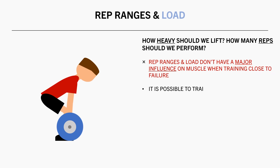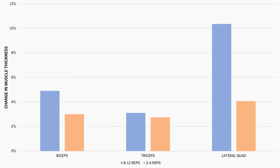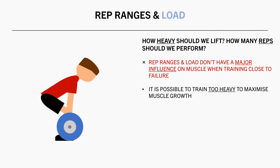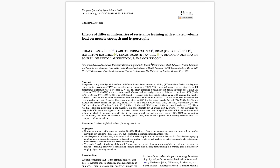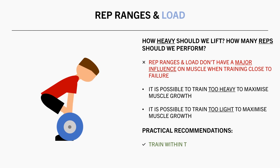However, it is possible for loads to be too heavy to maximise muscle growth. One study compared training within the 8–12 versus 2–4 rep range and found slightly superior gains in muscle thickness in the moderate rep range. It is also possible for loads to be too light — a study comparing 20%, 40%, 60%, and 80% 1RM loads found that the 20% 1RM condition experienced slightly inferior growth. As a practical recommendation, we can train anywhere within the approximate 5 to 20 rep range, with load adjusted to meet the target rep range.